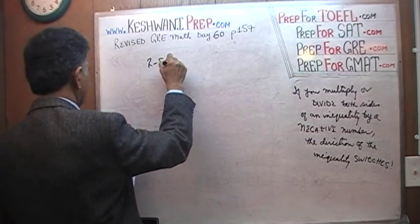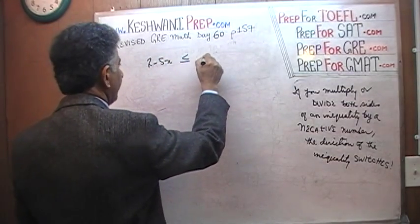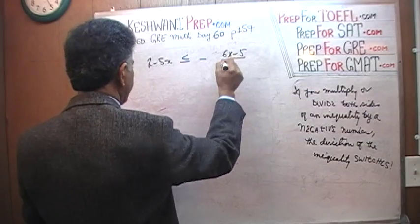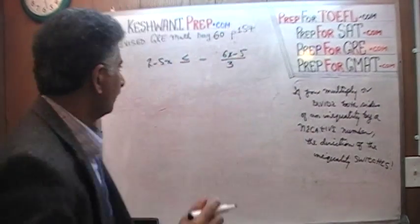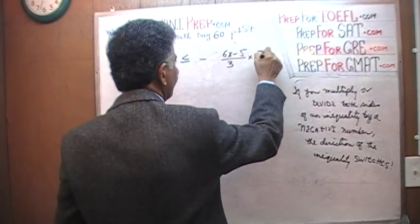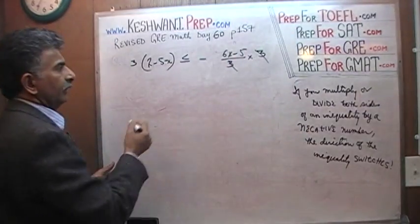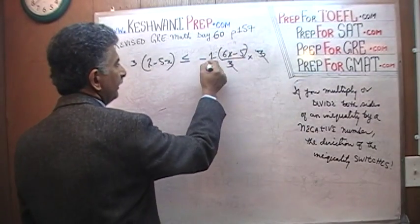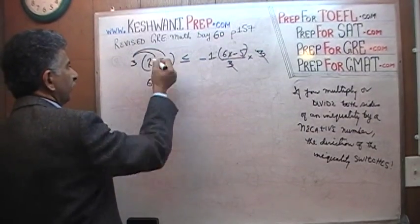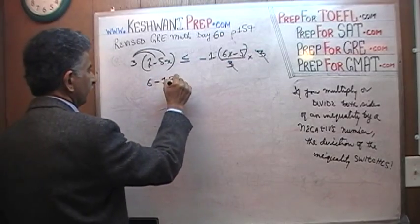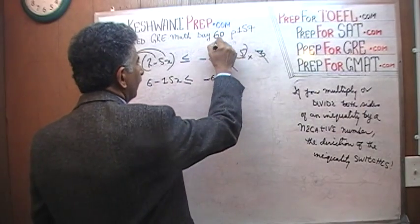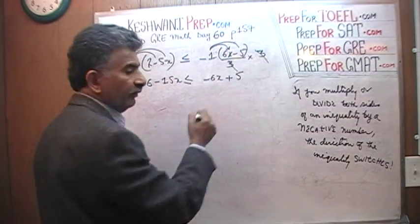Here is the problem: 2 minus 5x is less than or equal to negative 6x minus 5, all over 3. What we did is multiply both sides of the inequality by 3, and by doing so we got rid of that 3. There is a negative 1 in front. 3 times negative 5 is negative 15x, which is less than or equal to negative 1 times 6 is negative 6x.